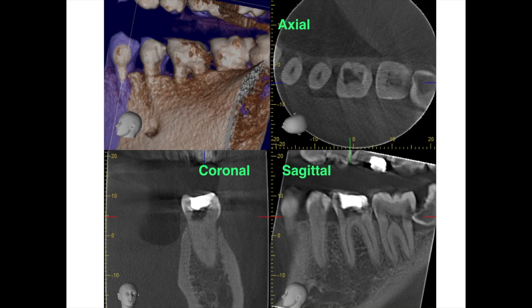I always subject my patients to a cone beam computed tomography — a small volume, small field of view, so you only get about 3 to 4 teeth in the slices. Looking at the axial slice, it clearly shows that there is a lot of destruction. I chose that slice to show the worst of all the slices — it shows maximum destruction. You can still see there is some amount of tooth structure remaining, and luckily there is no perforation.